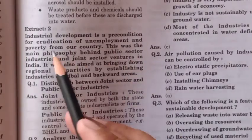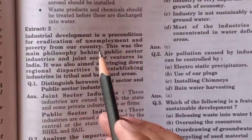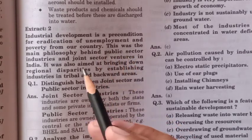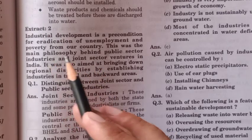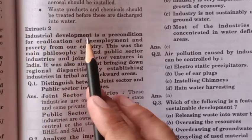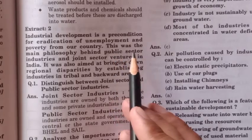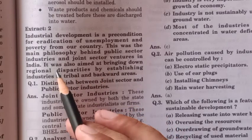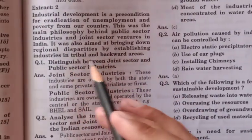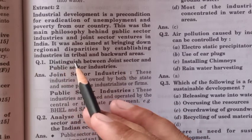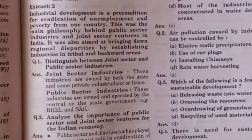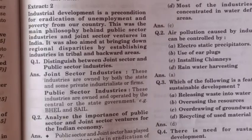Next extract: industrial development is a precondition for the eradication of unemployment and poverty from India. If we want to remove the evils of unemployment and poverty, we have to achieve industrial development. This was the main philosophy behind the public sector industry and joint sector ventures in India. It was also aimed at bringing down regional disparities by establishing industries in tribal and backward areas, giving employment and enabling economic development in those regions.